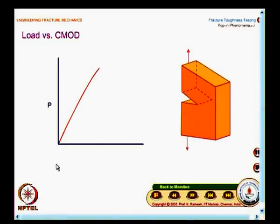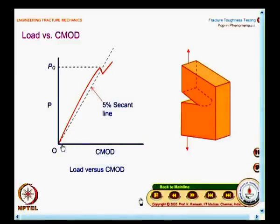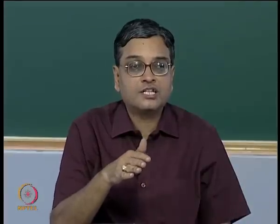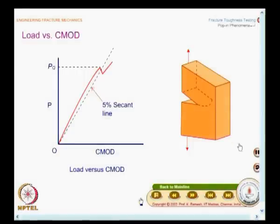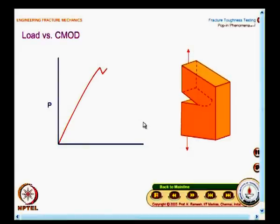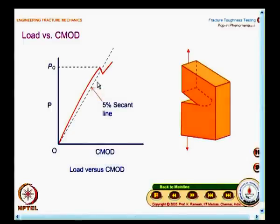Now we look at what happens when there is a pop-in. In certain specimens, you will have a pop-in phenomenon, where the shape of the graph shows a sudden jump in a thumbnail fashion. Only after some further increase in load will the specimen completely break. You again draw a 5 percent secant line, but what you take as PQ is the sharp height at the pop-in point.